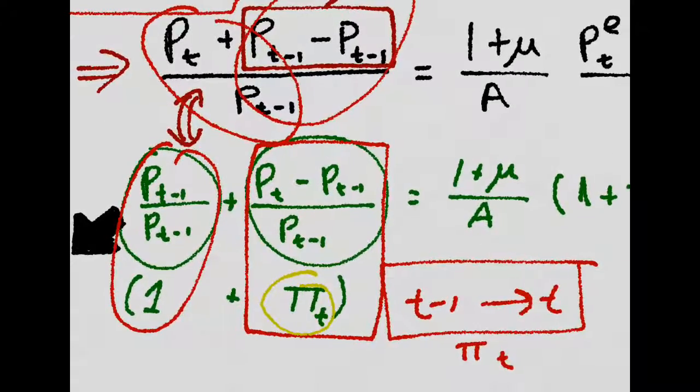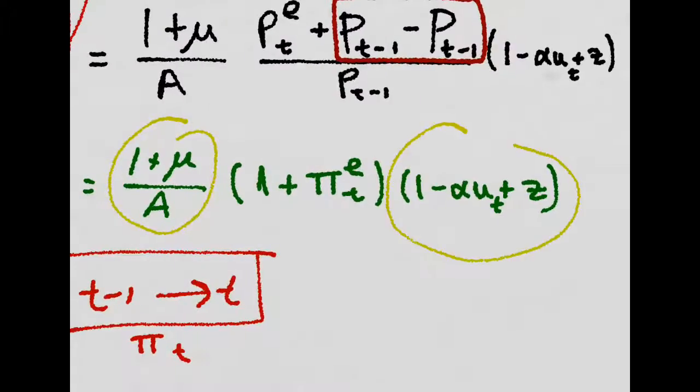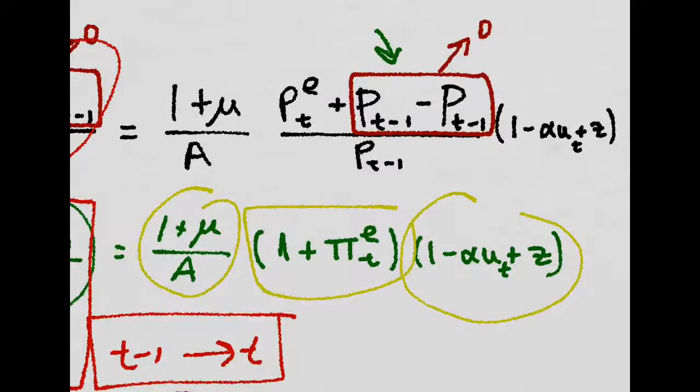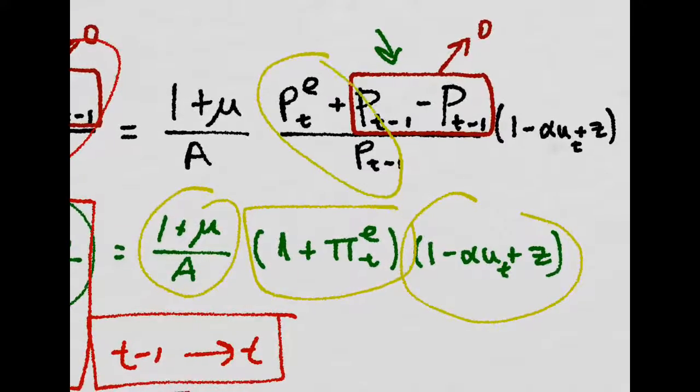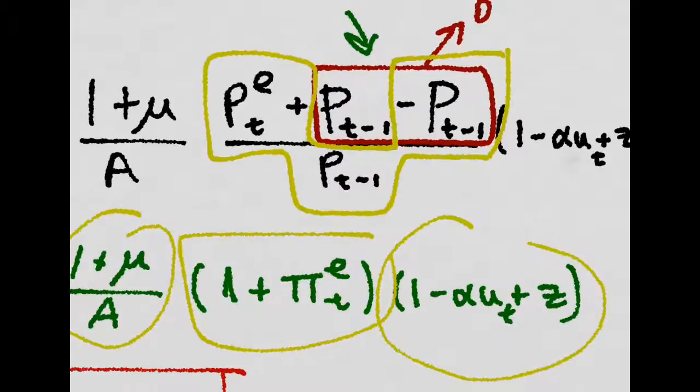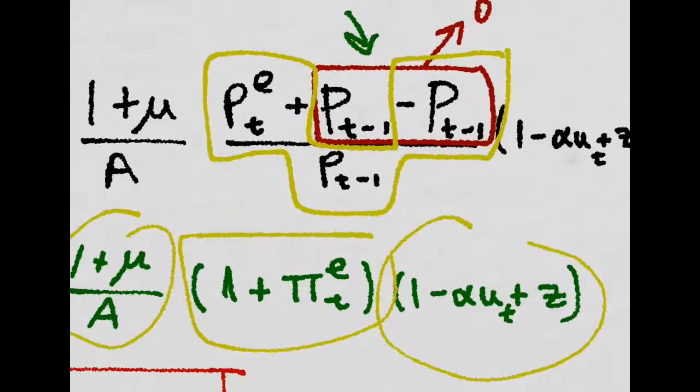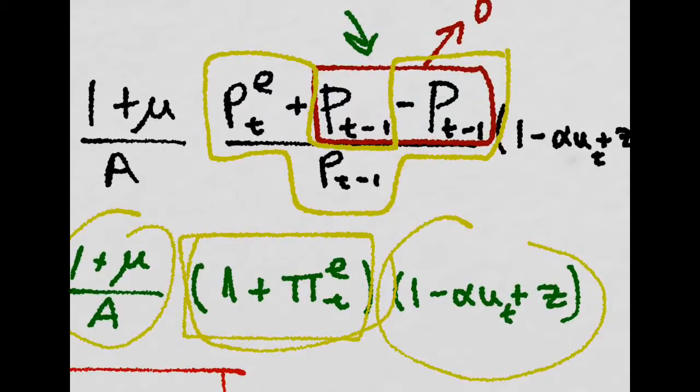So 1 plus the inflation rate at t equals all this times, we do the same thing here. This is just 1 plus the expected change in the price level, which is just 1 plus the expected inflation at t.